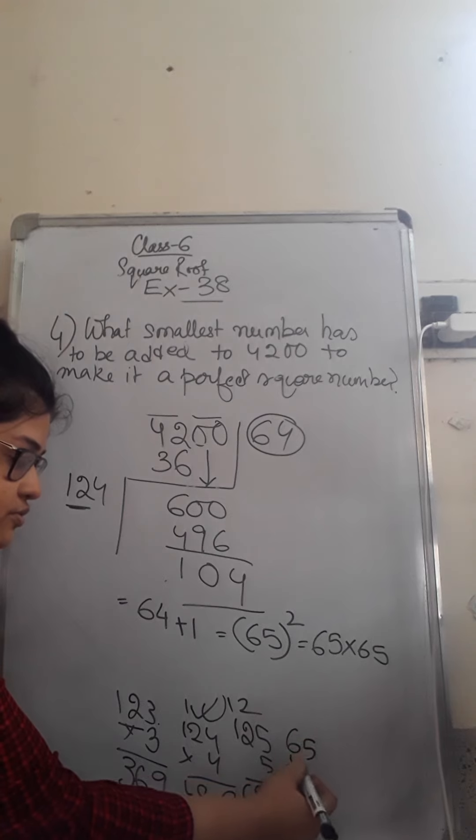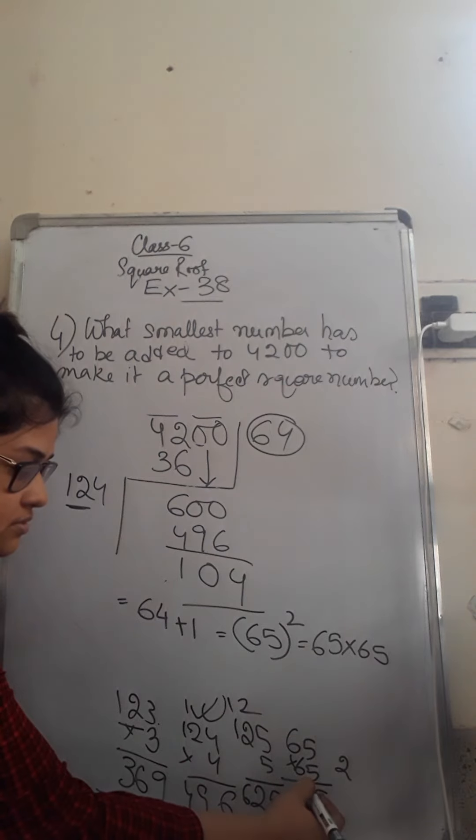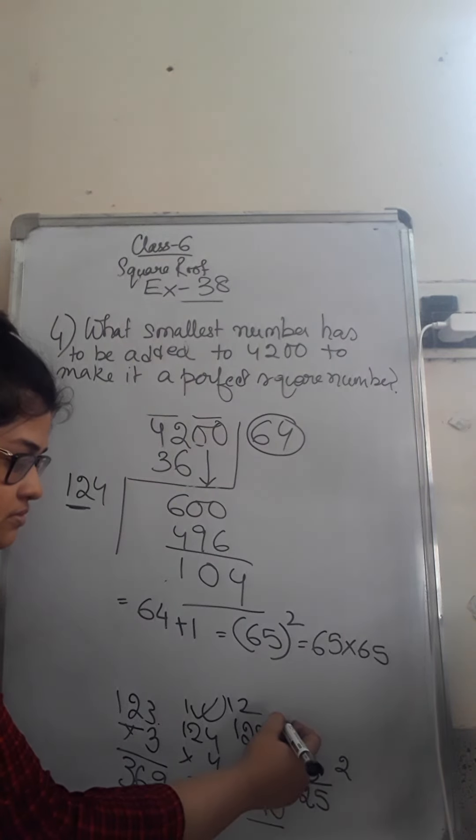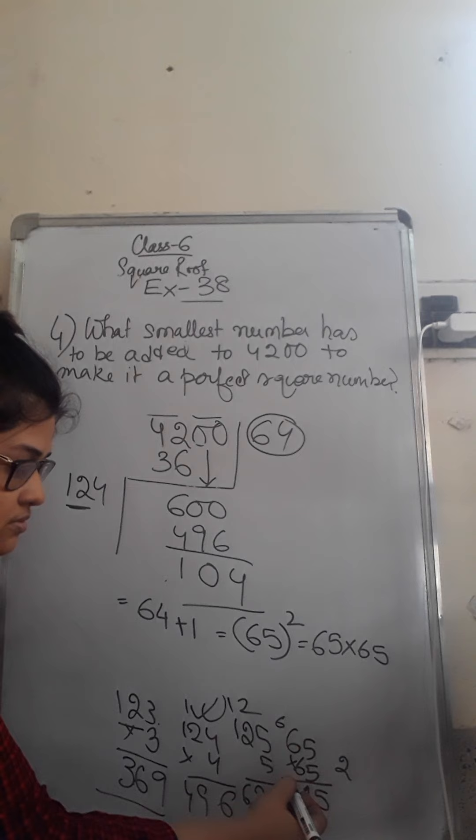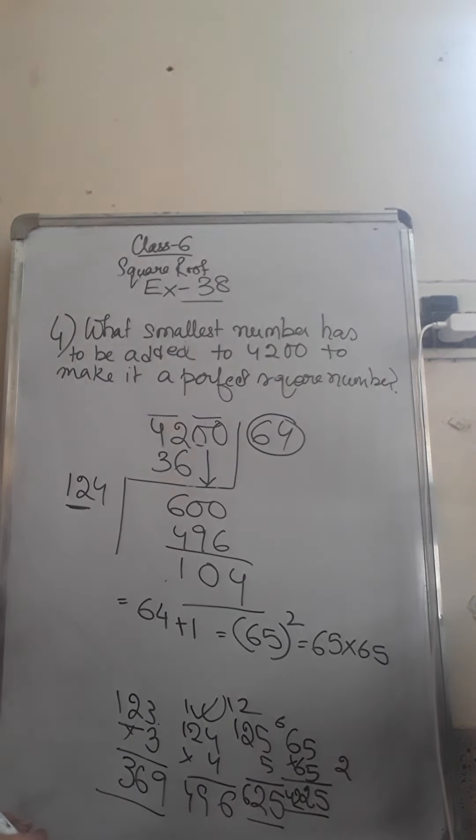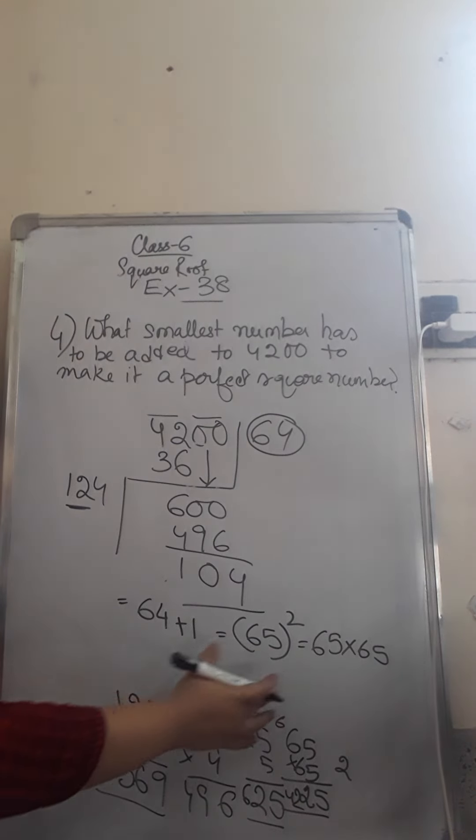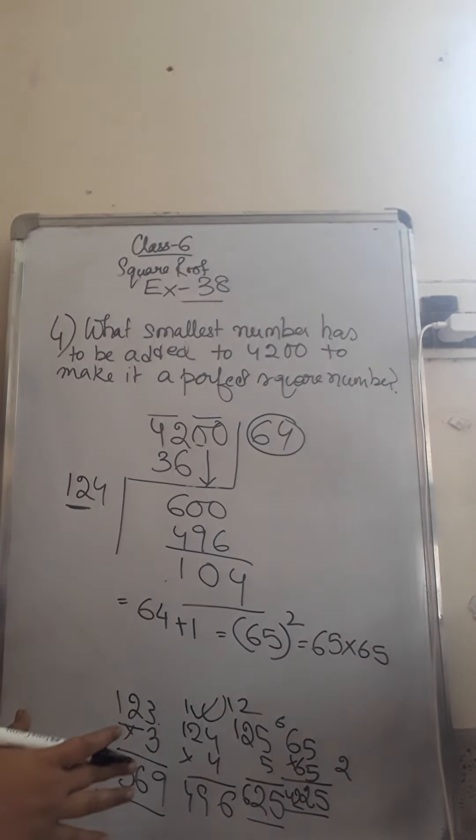So 65 into 65 gives 4225. So 4225 is the next perfect square number.